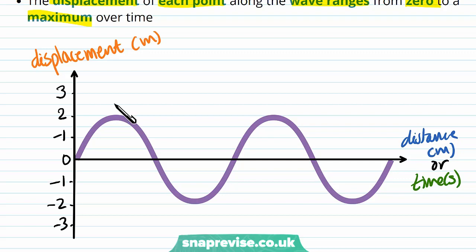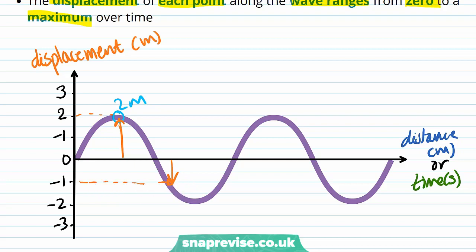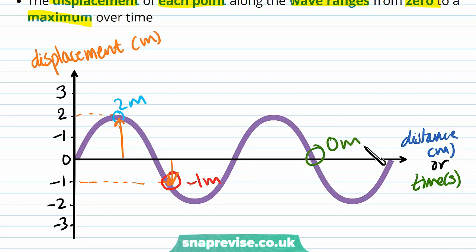For example, here we have a maximum at two metres — that's a point of maximum displacement. We can also measure the displacement at another point and see that it is minus one metre, noting the negative sign because it's in the negative direction. Then at another point we have zero displacement. So as time passes, the displacement of the wave from the equilibrium position varies, and we can see this on a graph.